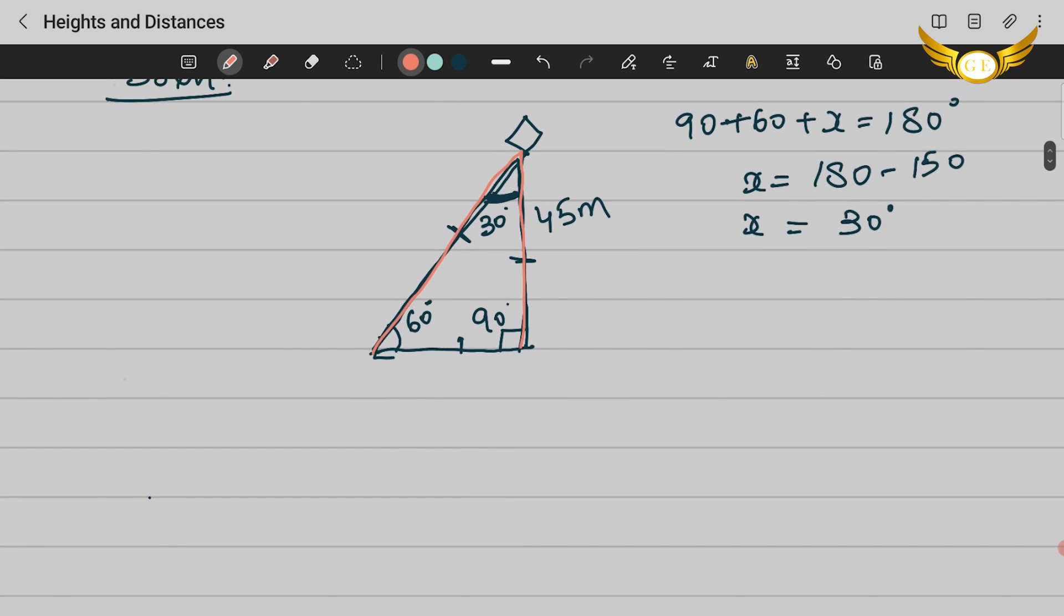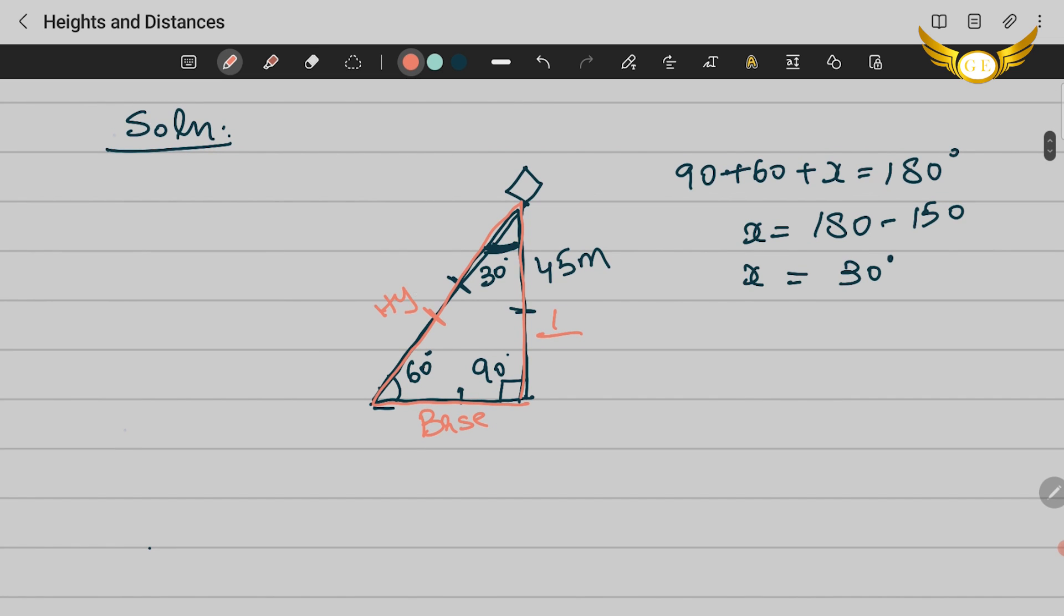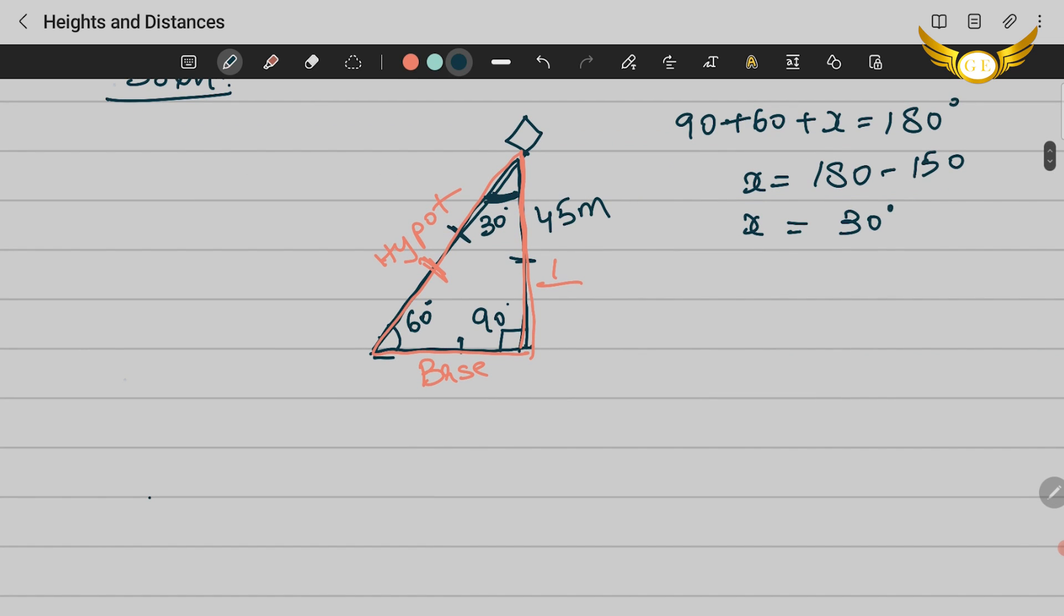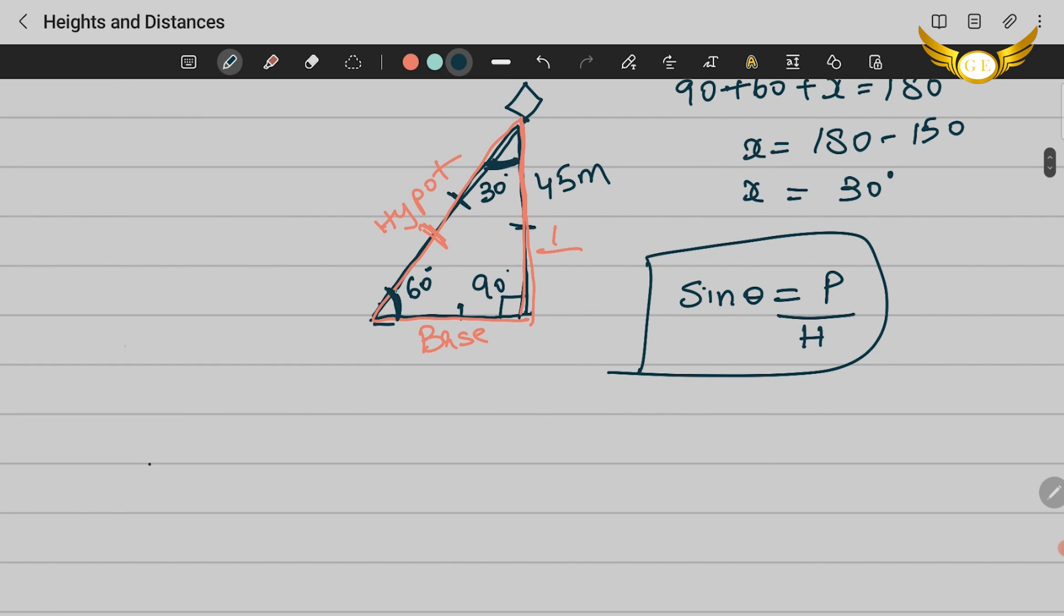Now let me come back to this question. We need to find the hypotenuse. This is the base, this is the perpendicular and this side is the hypotenuse. We have the perpendicular with us and we need to find the hypotenuse. The formula for sin θ is perpendicular/hypotenuse. So the sin θ here is 60 degrees. So sin 60° = 45/x, where x is the hypotenuse we need to find.